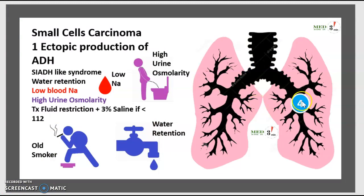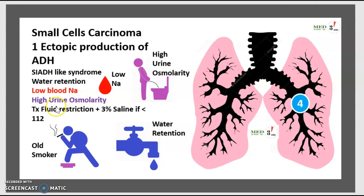Moving on to number four: small cell carcinoma. There are two cases. The first is ectopic production of ADH, causing SIADH-like syndrome with water retention, low blood sodium, and high urine osmolarity. Management is fluid restriction. If serum sodium is lower than a critical threshold, give 3% saline.